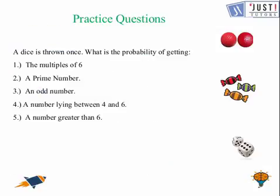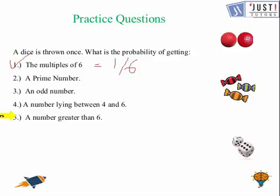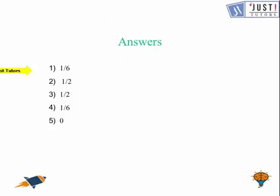Now let us move to a practice question. A dice is thrown once. What is the probability of getting a multiple of 6? Multiples of 6 are the numbers in the 6 times table, and on a die we can see only one multiple of 6, which is 6 itself. So the probability will be 1 over 6. Now pause the video and try this question. Assuming that you have done it, you can check your answer from this slide. If you got them correctly, that is really amazing — you are doing a superb job here. Thank you for watching the video. For more, please visit justtuders.com.